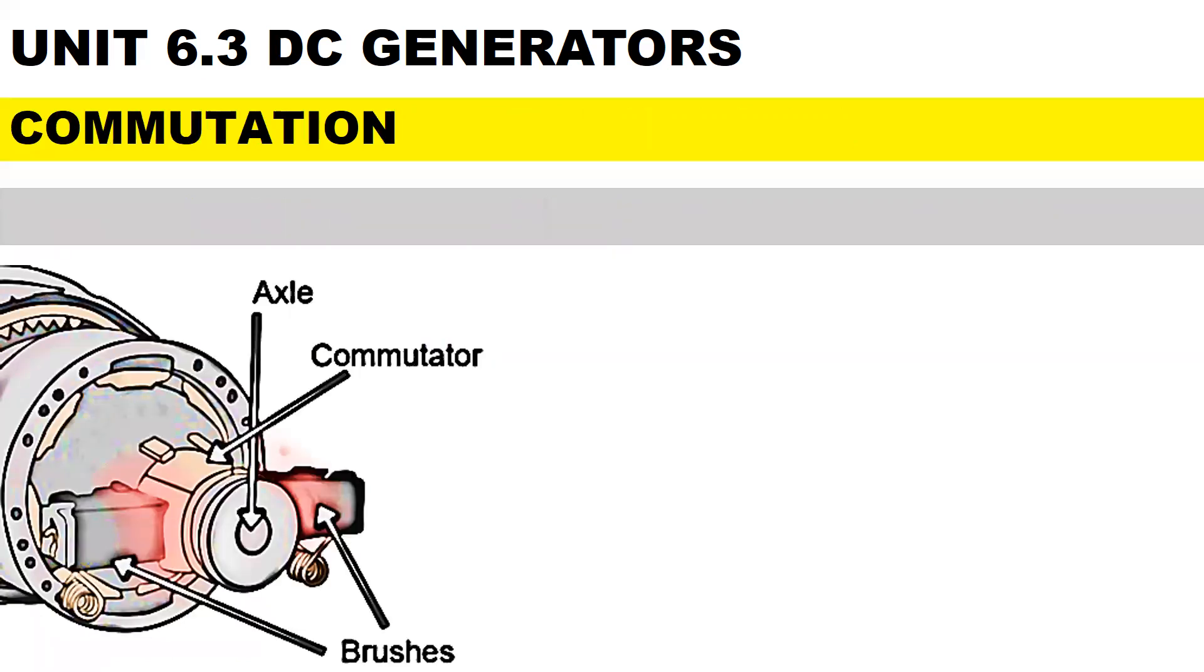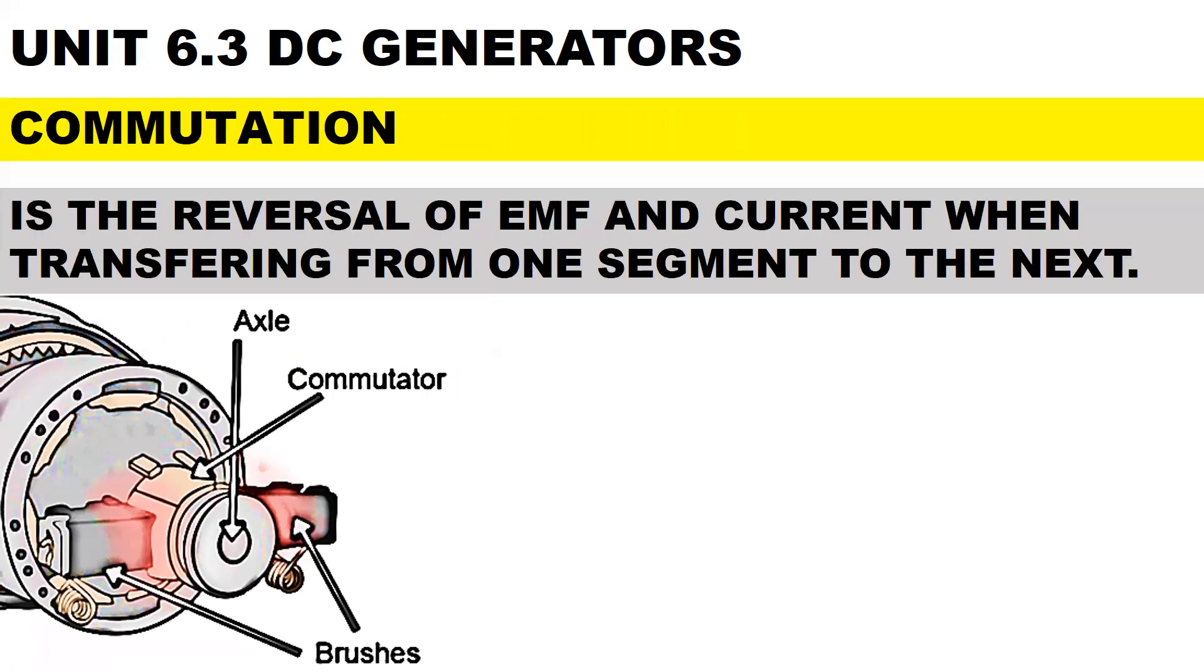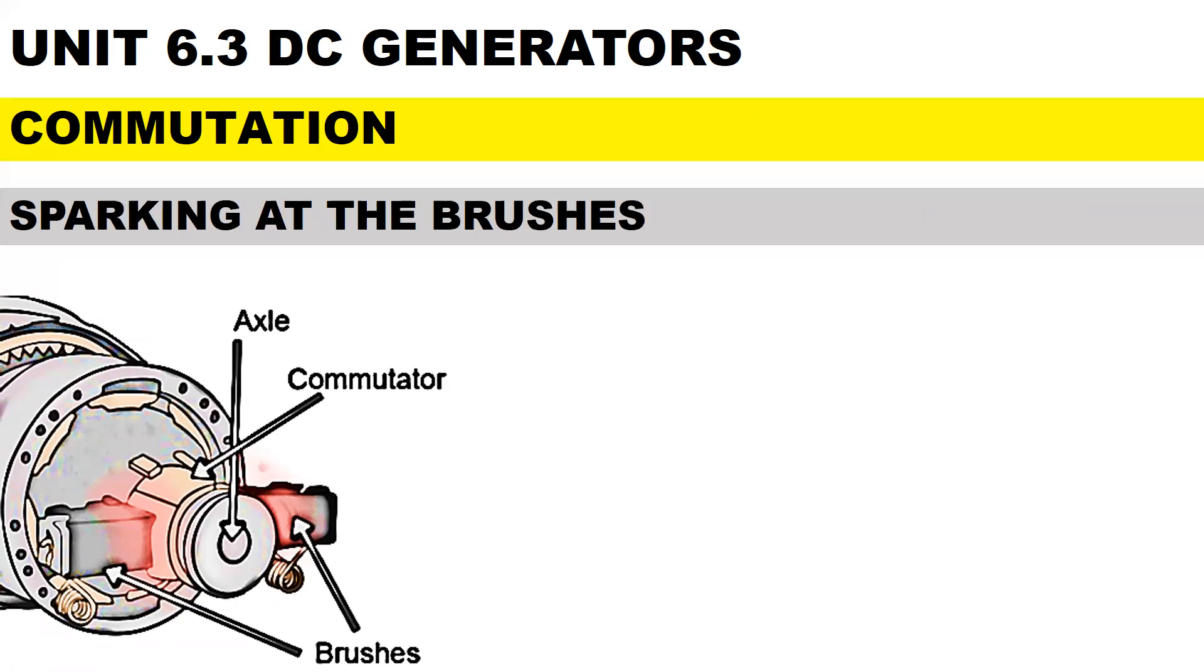To define commutation, it is the reversal of EMF and current when transferring from one segment to the next. The negative consequences of commutation is sparking at the brushes, which can lead to damage at the commutator's surface.